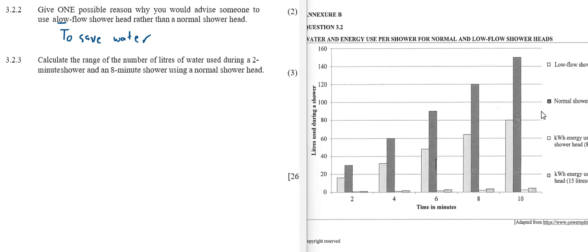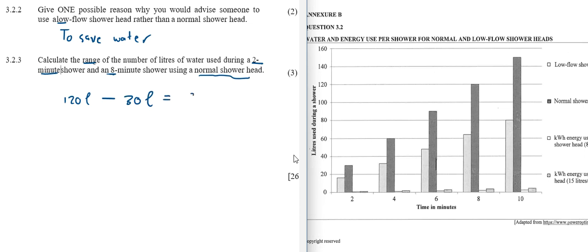There are two parts to this question. We must look at the normal showerhead — that's the darker bar graph. The range is the biggest minus the smallest. At 8 minutes on the dark bar graph, we've got 120 liters. For the 2-minute dark bar, it's between 20 and 40, so that would be 30 liters. 120 minus 30 gives you 90 liters. That's the end of question three.